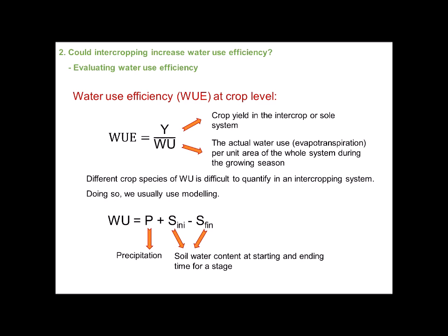For above ground, the difference in land use proportion might be very small and visible to the eye. But for below ground, the overlap of roots might be very large and difficult to quantify.